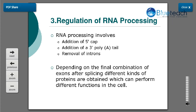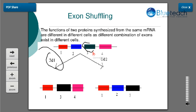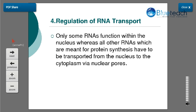If exons one and three are joined together, it will produce one kind of protein; if exons two and three are joined together, it will produce another kind of protein. This is known as exon shuffling. Depending upon the final combination of exons after splicing, different kinds of proteins are obtained which can perform different functions in the cell. So depending upon the need, different exons get joined and different proteins are produced, specific for each cell type.